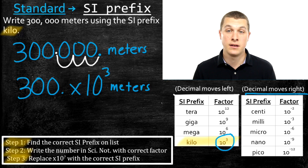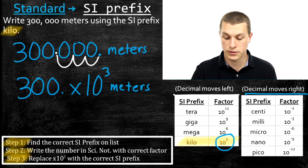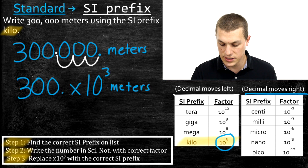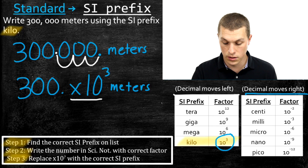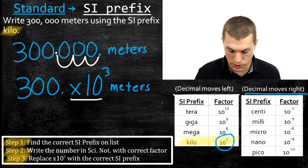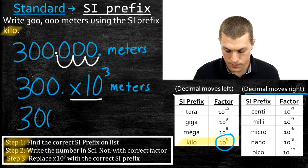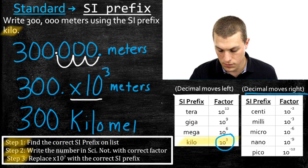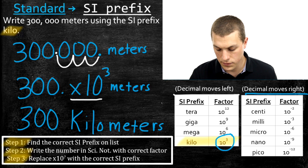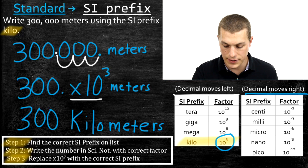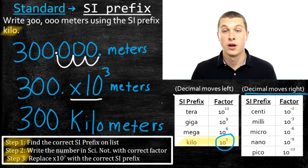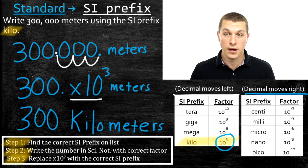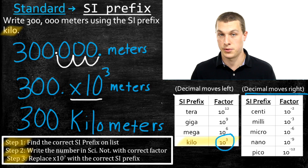Step three says just replace that times ten to the whatever with the correct SI prefix. So where we see times ten to the third, we write kilo. What we get is 300 kilometers. So 300,000 meters written with the SI prefix kilo is 300 kilometers.